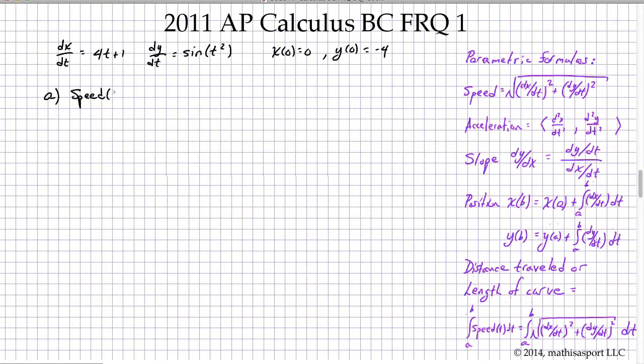I'm going to say that speed at time t equals 3 is going to equal the square root of (dx/dt)² plus (dy/dt)², and we're going to evaluate it at t equals 3.